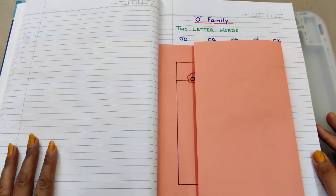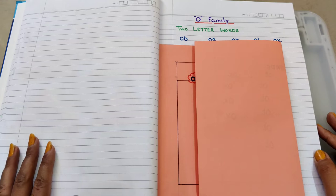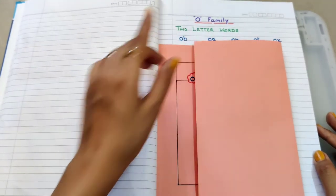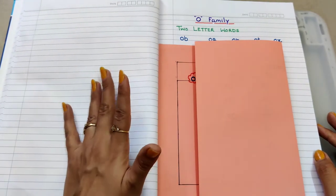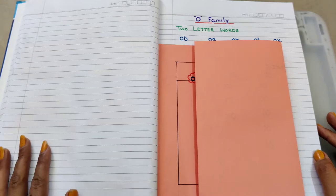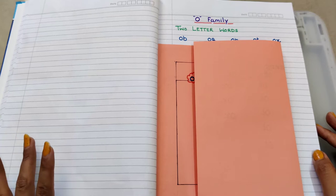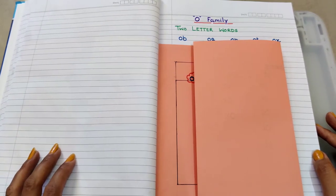Hey everyone, welcome back to our channel Shining Dude and Mama is Up. I hope you all are doing good. In today's video I'll be sharing O family words. Previously I shared A, E, I family words - how to introduce them to children in the simplest way. If you haven't gone through those videos, I'll share the link in the description box.